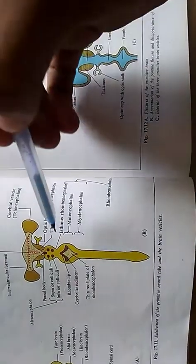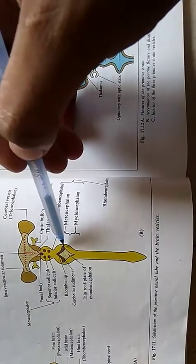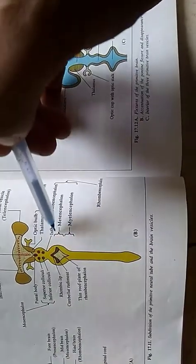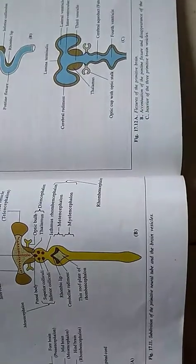The cavity of the hindbrain vesicle will form the fourth ventricle. At the junction of midbrain and hindbrain there is a constriction which is known as isthmus rhombencephalon.